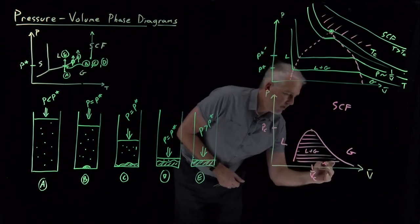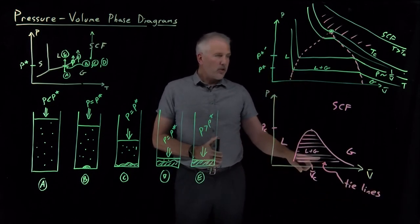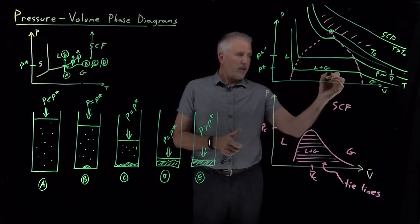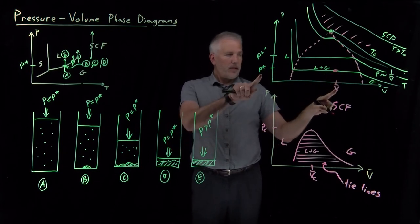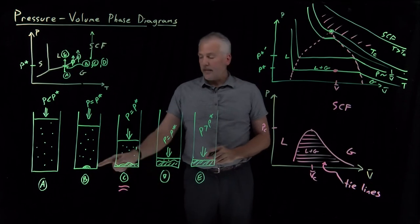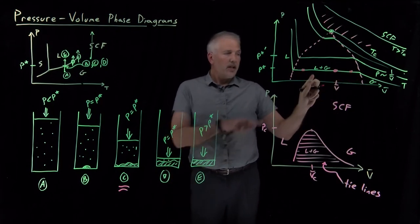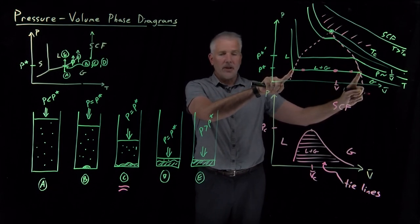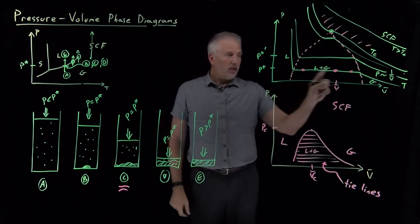We also have horizontal lines drawn in the phase coexistence region — those are called tie lines. If I have a system at a particular molar volume and at the vapor pressure, in our visual depiction that's some system like system C: I have liquid and gas coexisting. I can have liquid and gas coexisting over a range of different volumes, and that represents various points on this tie line. We call it a tie line because it ties together the liquid system and the gaseous system, both of which can exist at the vapor pressure. I can have them exist in any arbitrary combination: a lot of liquid and a little gas, or a lot of gas and a little liquid — all tied together with this tie line.